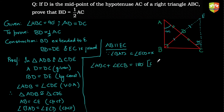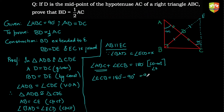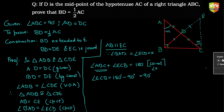Since AB is parallel to EC, co-interior angles ABC and ECB add up to 180 degrees. Angle ABC is already 90 degrees, so angle ECB equals 180 minus 90, which is 90 degrees. So angle ECB is also 90 degrees.